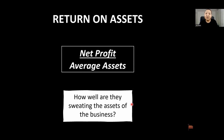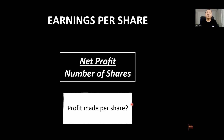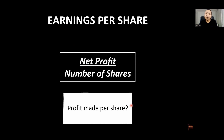Earnings per share — 'earnings' is just another word for profit. So it's net profit divided by the number of shares. Companies calculate this and you can often find it at the bottom of the income statement or in the notes to the financial statements. The higher the better.